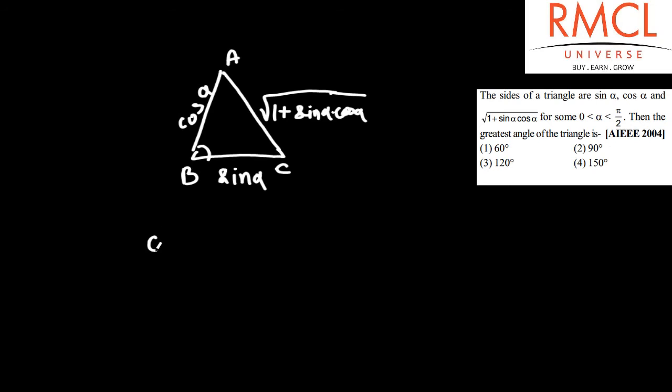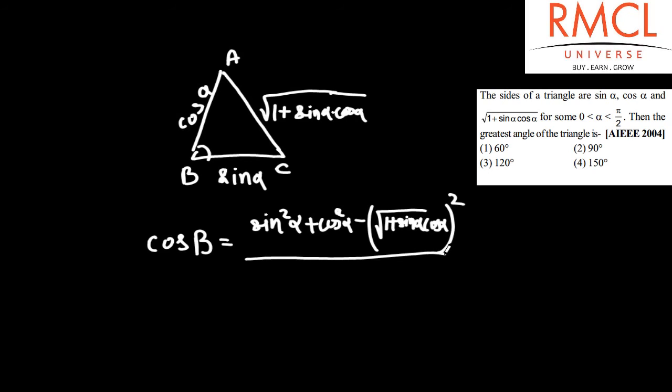By the cosine rule, cos B equals (sin²alpha + cos²alpha - (sqrt(1 + sin alpha cos alpha))²) divided by 2 sin alpha cos alpha.